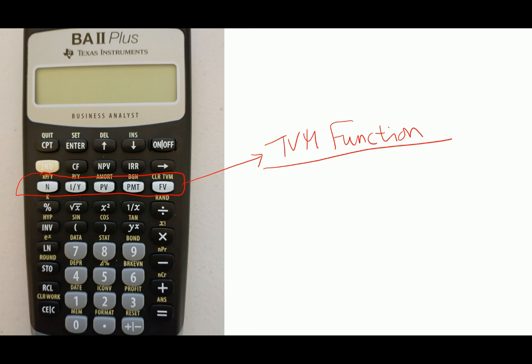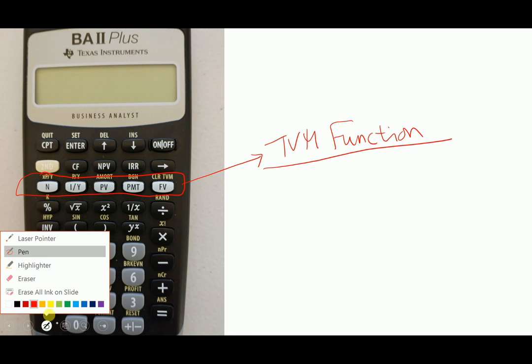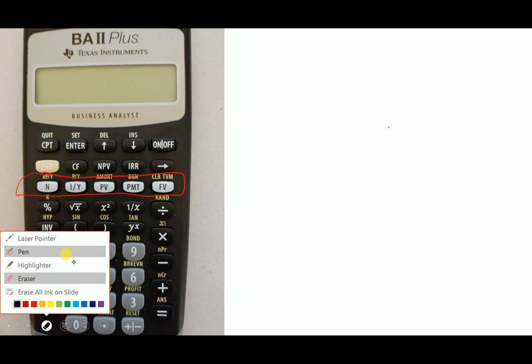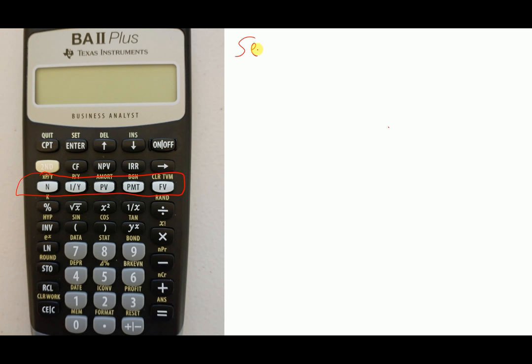Before starting, we actually have to set up the calculator. There are two starting setup steps. So let's set up first. Setup number one: let's change the number of decimal points. Press the second button here — this is like the shift key of your keyboard.